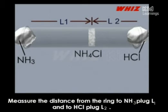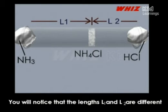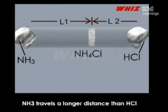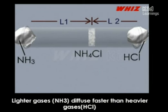Measure the distance from the ring to NH3 plug L1 and to HCl plug L2. You will notice that the length L1 and L2 are different. NH3 travels a longer distance than HCl. Lighter gases NH3 diffuse faster than heavier gases HCl.